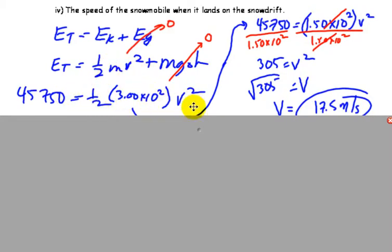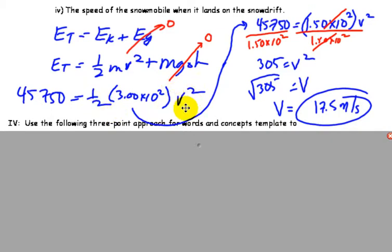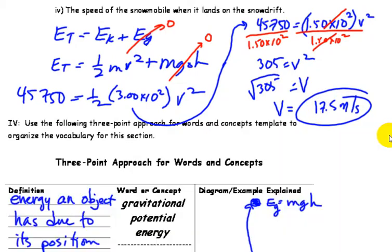So one-half times 300 times V squared. So to solve for V squared, I'm going to have to multiply each side by 2. Or what I could do here is just take half of 300 and get 150, and then divide each side by 150, and I get 305 is equal to V squared. And of course, to solve for V, you take the square root. So it works out to be 17.5 meters per second.